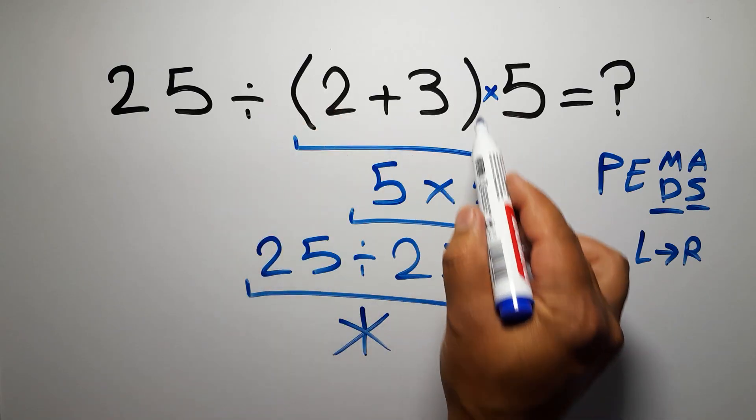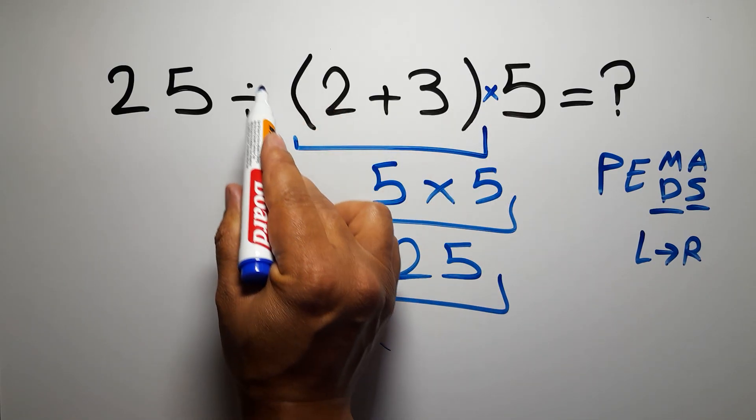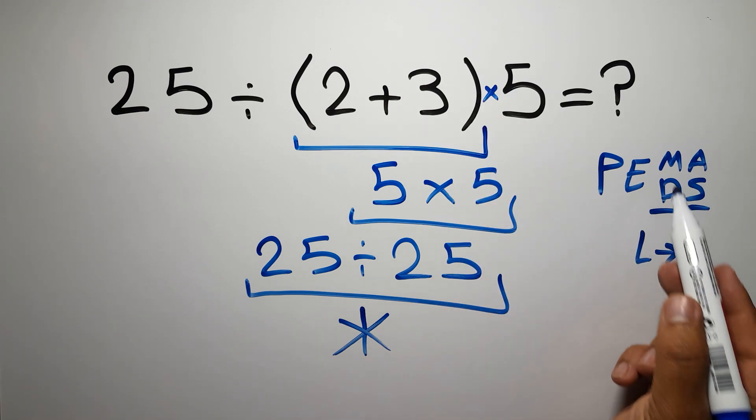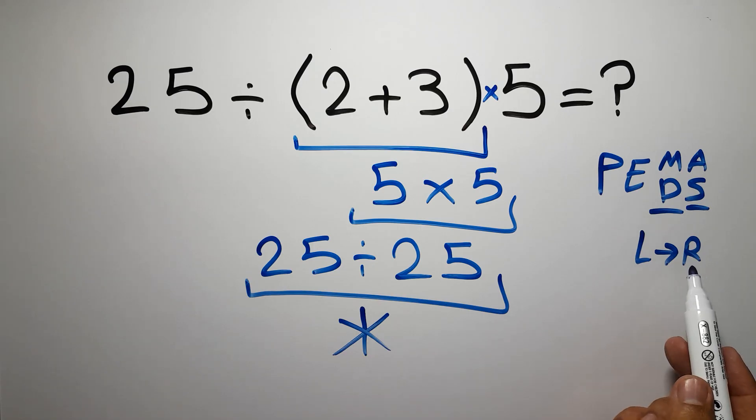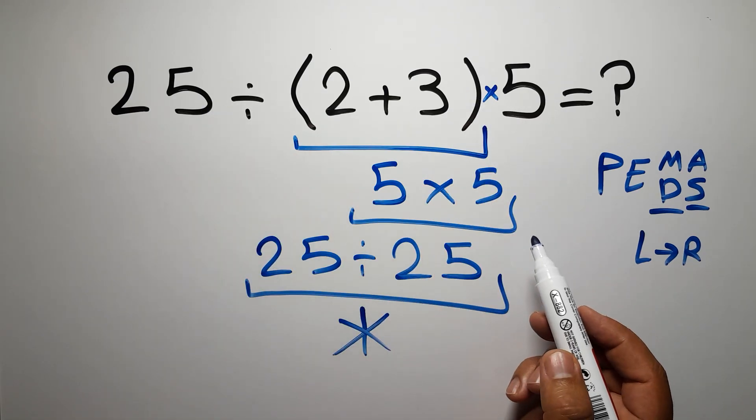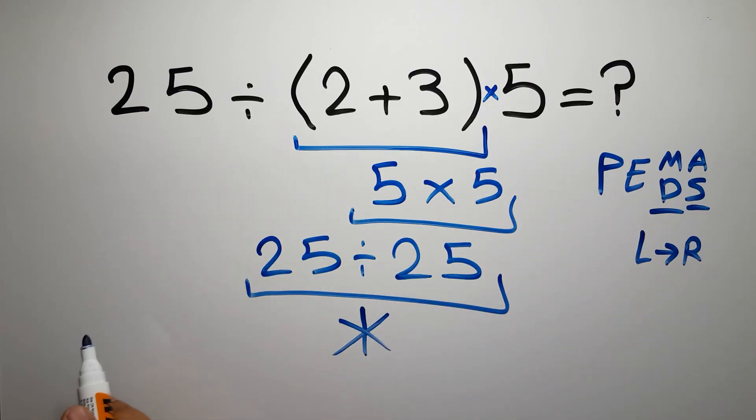So first we have to do these parentheses, and after these parentheses, we have one division and one multiplication. As I said, multiplication and division have equal priority and we have to work from left to right. So then this division and finally this multiplication. If you do this multiplication before this division, it is wrong.